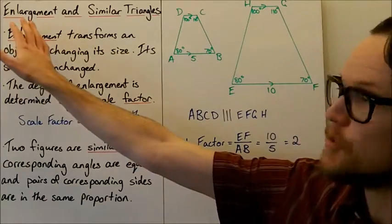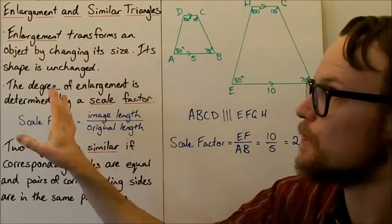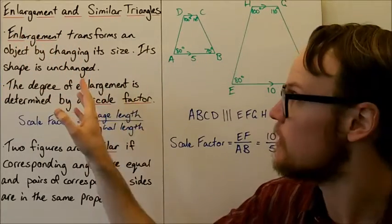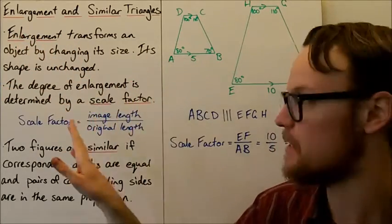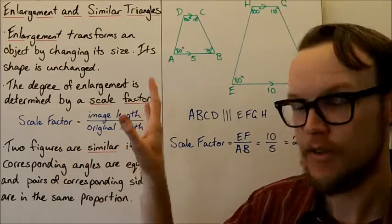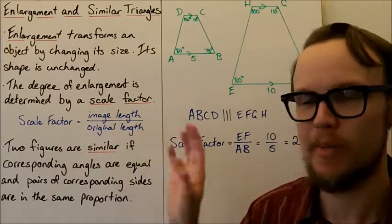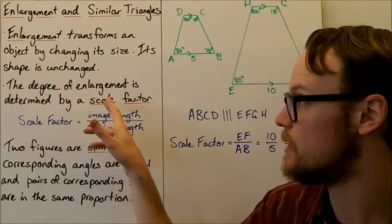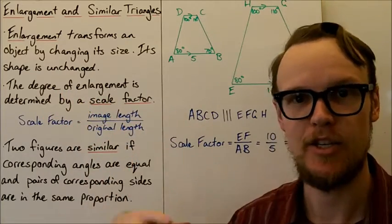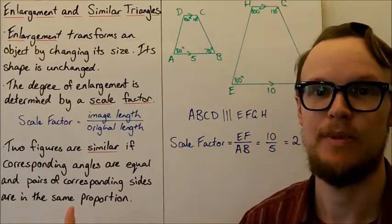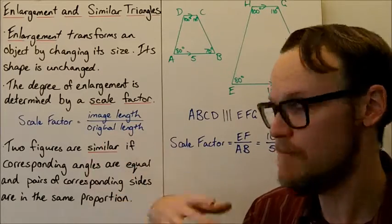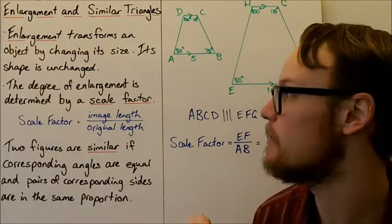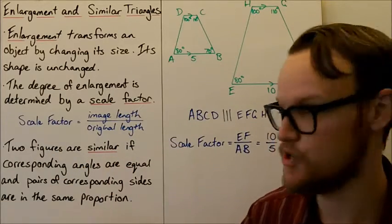Today we're going to look at enlargement and similar triangles. Enlargement transforms an object by changing its size, while its shape remains unchanged. The degree of enlargement is determined by a scale factor, which shows exactly how much bigger or smaller our image is compared to the original object.